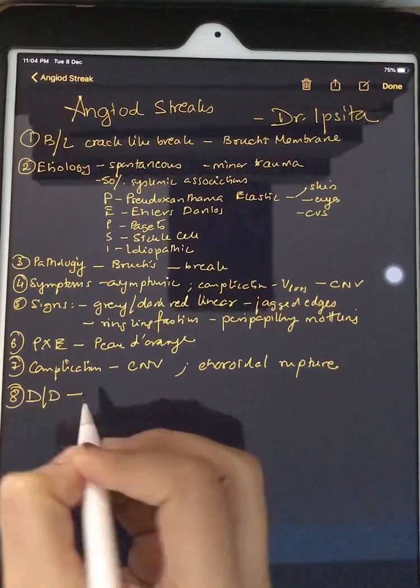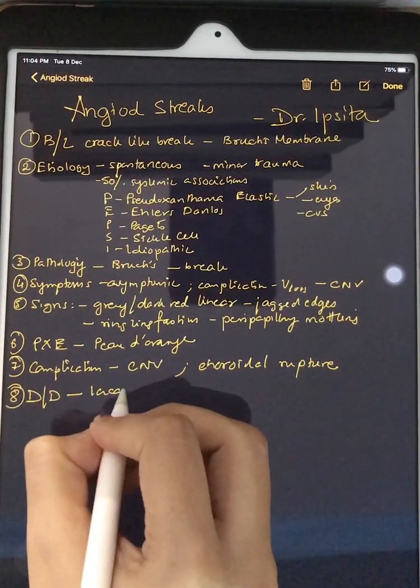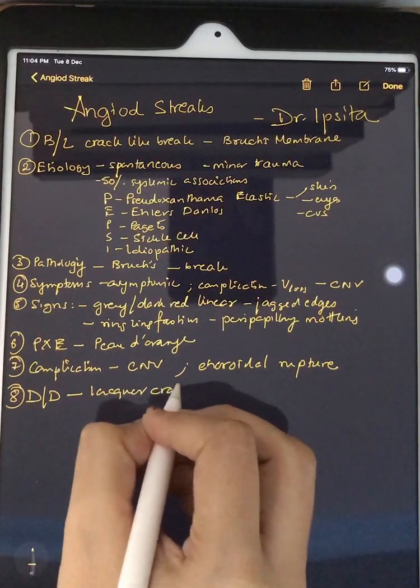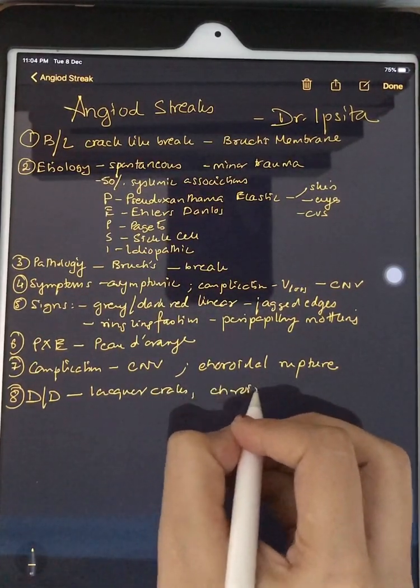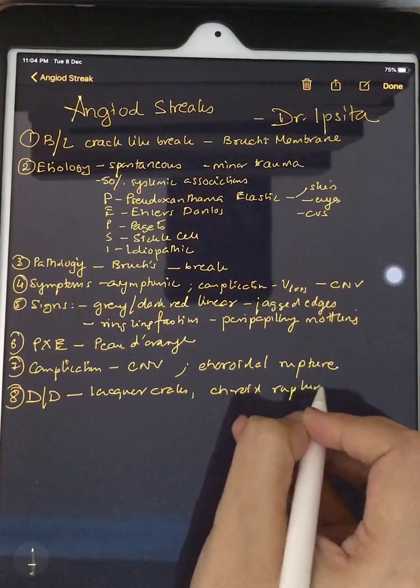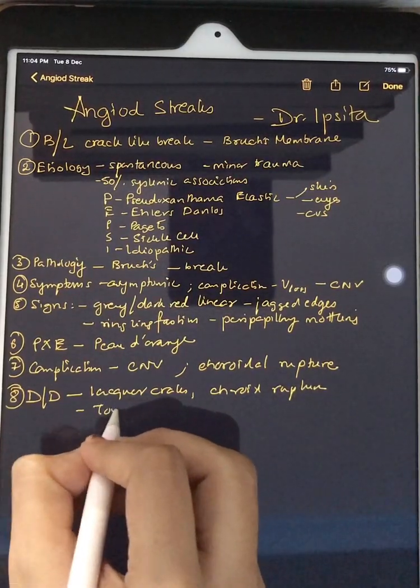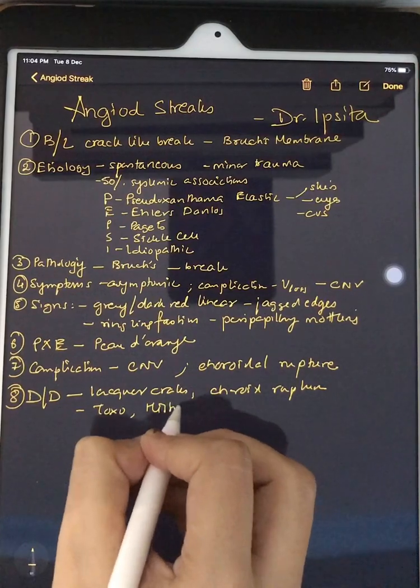What are the differential diagnoses that come to mind? Lacquer cracks. Again, choroidal rupture. We can also have differential of toxo and histoplasmosis.